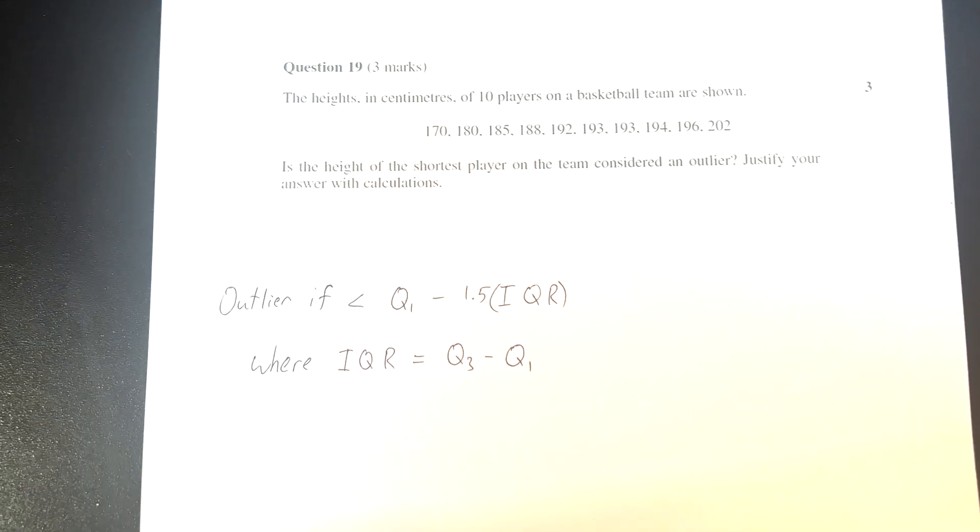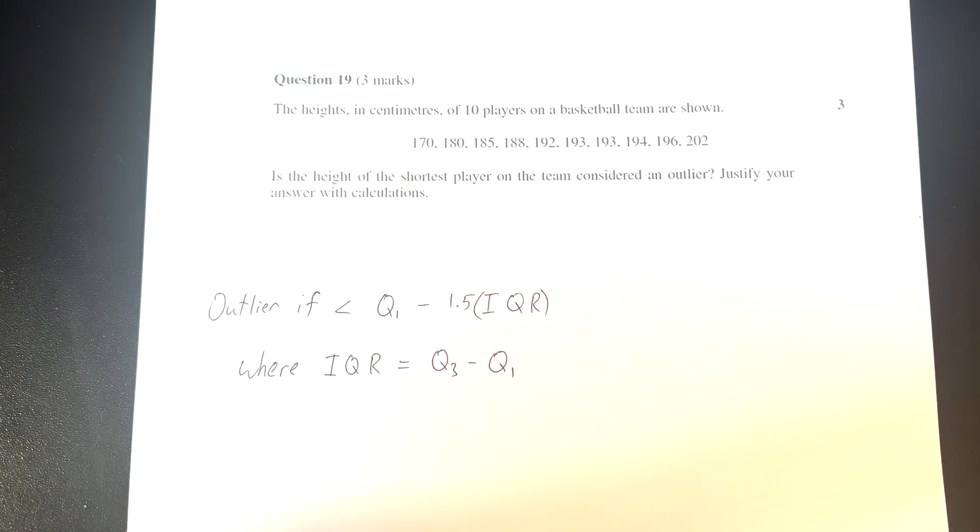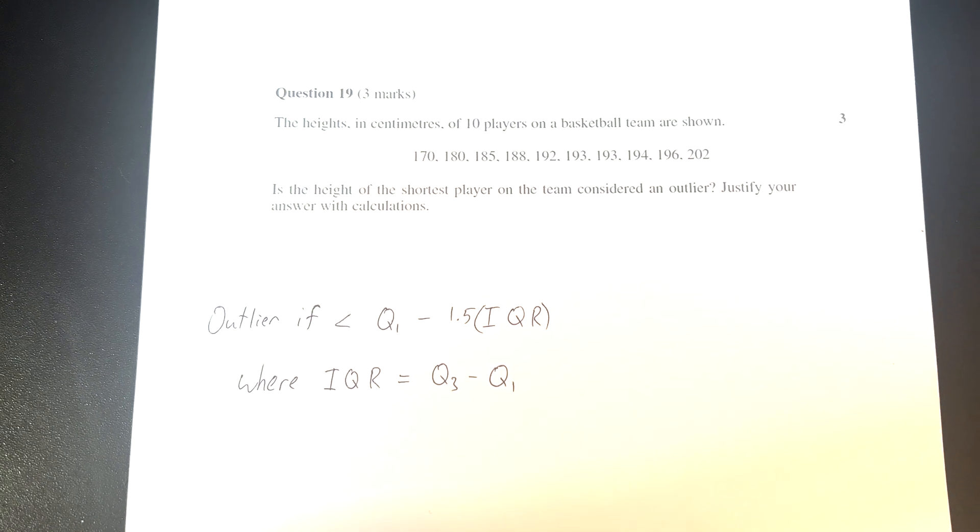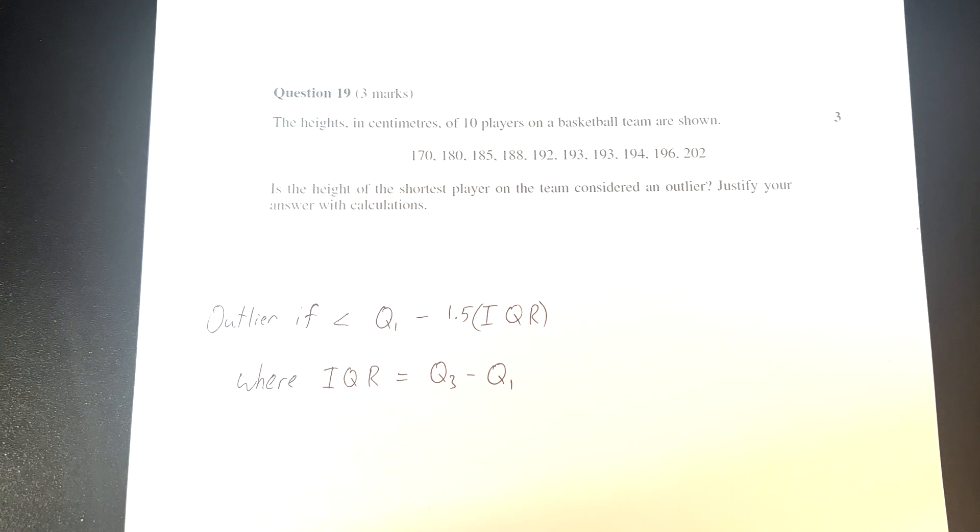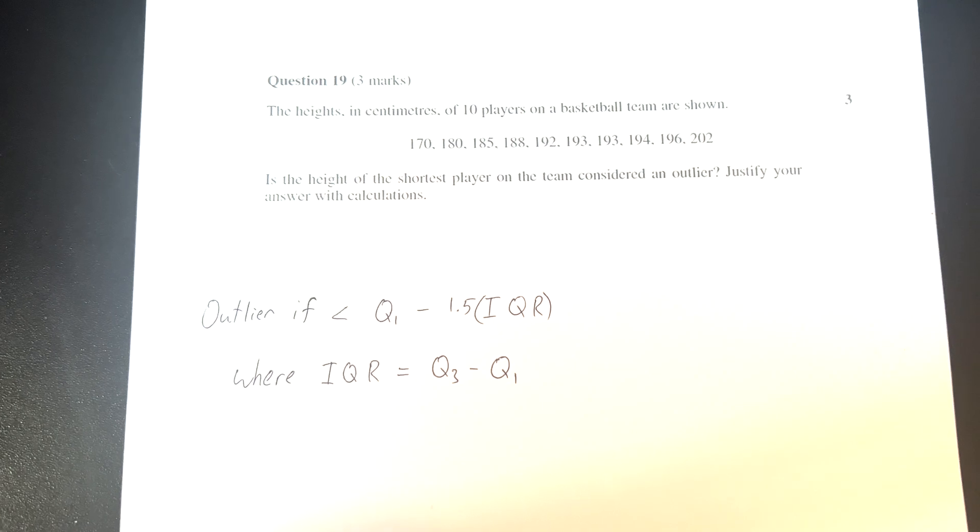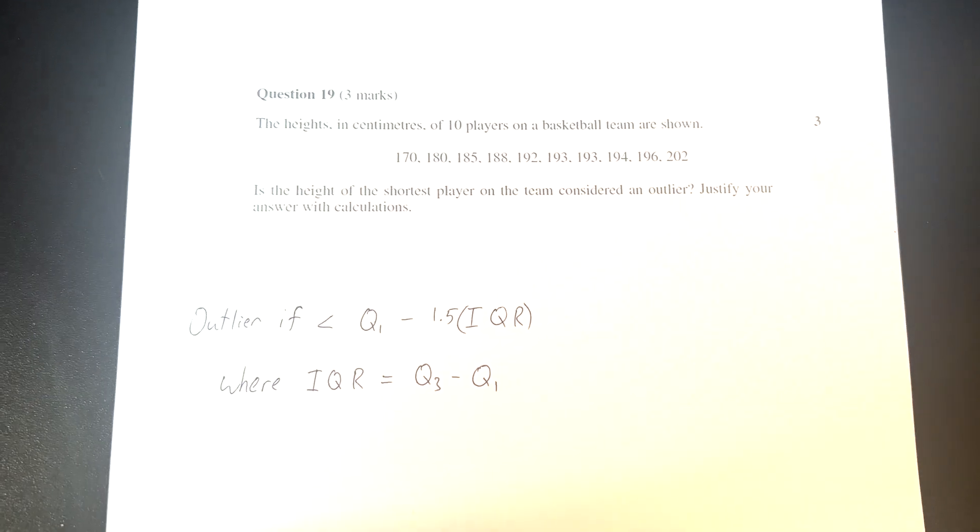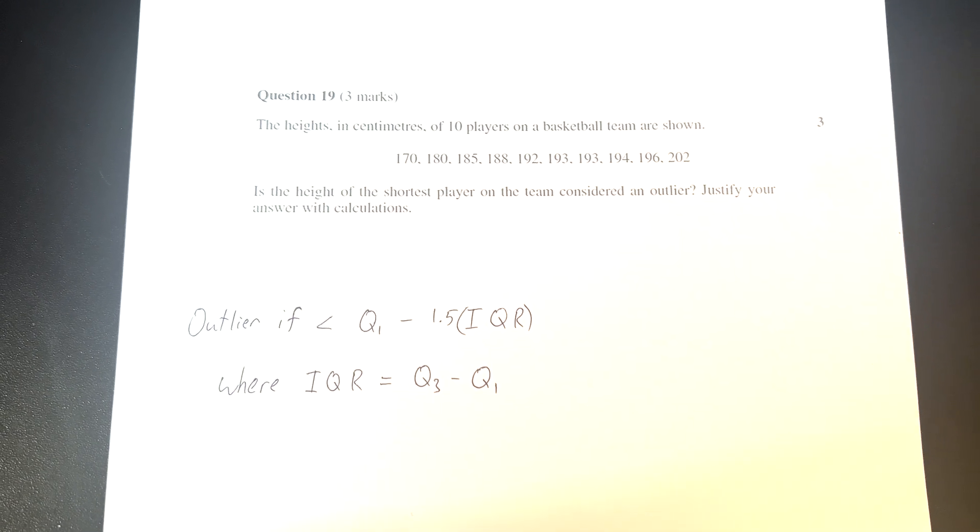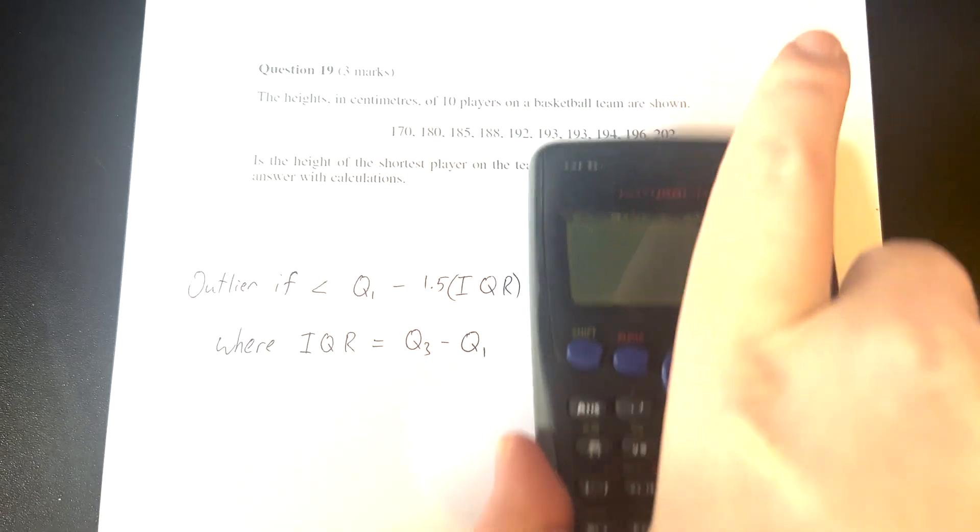We've written down here that a score is an outlier on the lower end if it's less than Q1 minus 1.5 times the interquartile range. The interquartile range is Q3 minus Q1. We can figure it out by hand, but let's use our calculator and showcase what we can do.